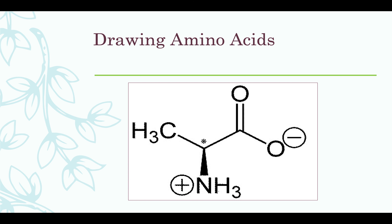If you look at the alpha carbon, you will notice that there is an asterisk. We know from organic chemistry that when there is an asterisk on your carbon atom, it means it's chiral. On the next slide, we'll be discussing this.